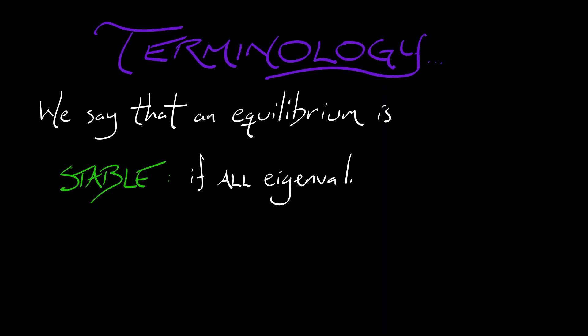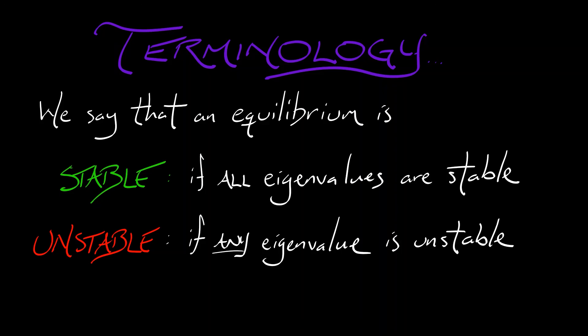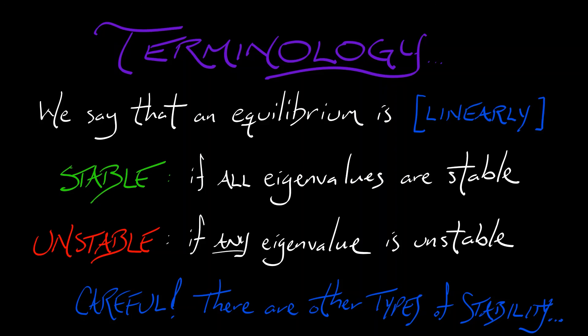So in the end, what we're going to say is that an equilibrium is stable if all of its eigenvalues are stable eigenvalues. We're going to say that an equilibrium is unstable if any eigenvalue is unstable. Now this is just like we did in 2D, but there's a lot more eigenvalues around. Now you have to be careful. If you look at other textbooks, if you learn dynamical systems from another source, there are other types of stability. The language is a little bit complicated. We might say, to be a little more specific, that this is linearly stable or linearly unstable. So when you're out in the wild, be careful with terminology.